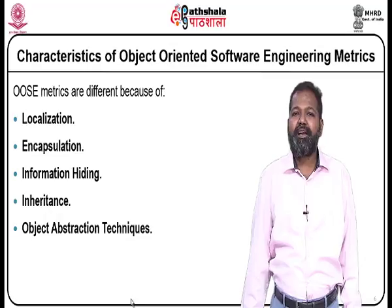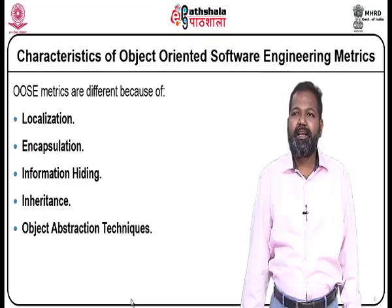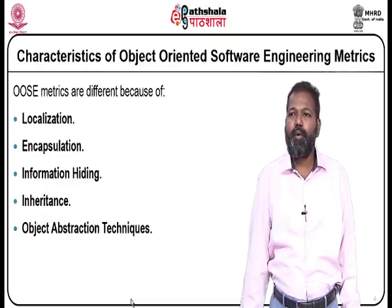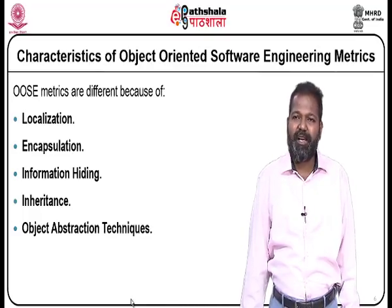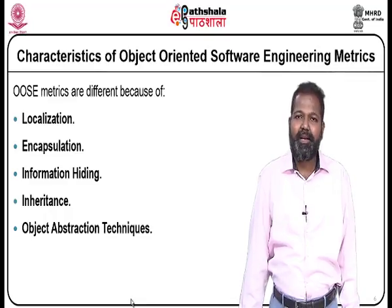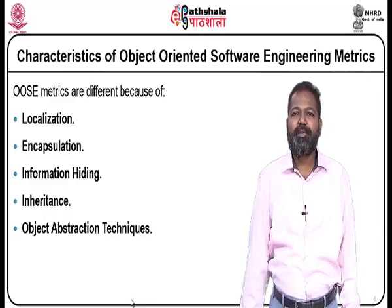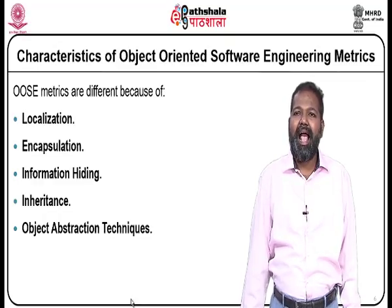Characteristics of object oriented software engineering metrics. First, an introduction to object orientation. What is an object? An object is an entity of interest with well-defined attributes and exhibits behavior. Behavior is through operations that are performed on an object. The state of an object is the set of values associated with each attribute of an object at a point of time.